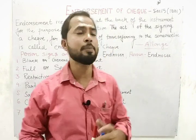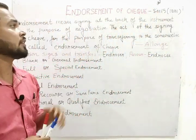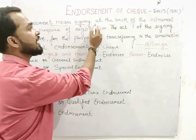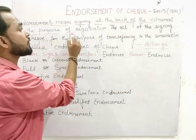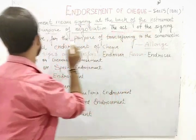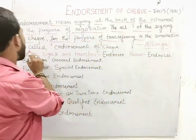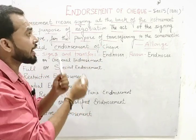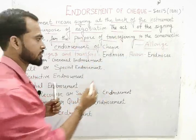Endorsement is defined by the Negotiable Instruments Act 1881, Section 15. Endorsement means signing at the back of the instrument for the purpose of negotiation — that is, for the purpose of transfer. The act of signing a check for the purpose of transferring it to someone else is called endorsement of check.